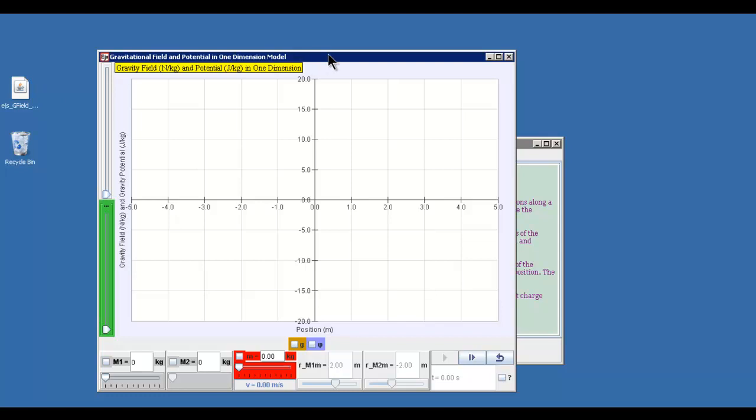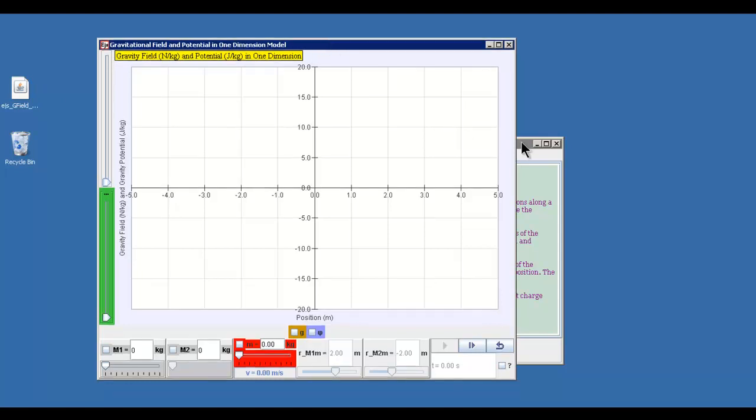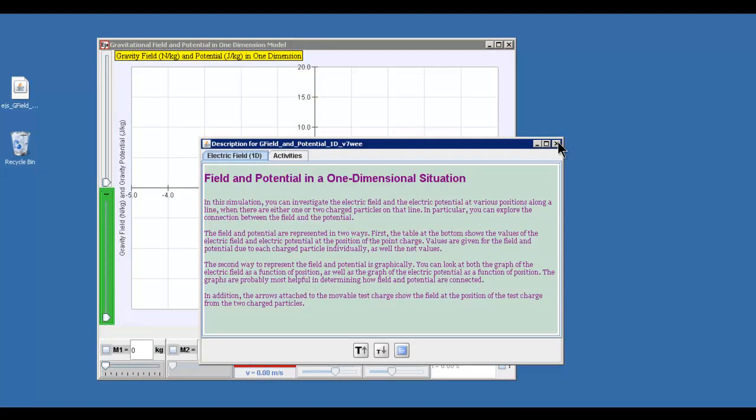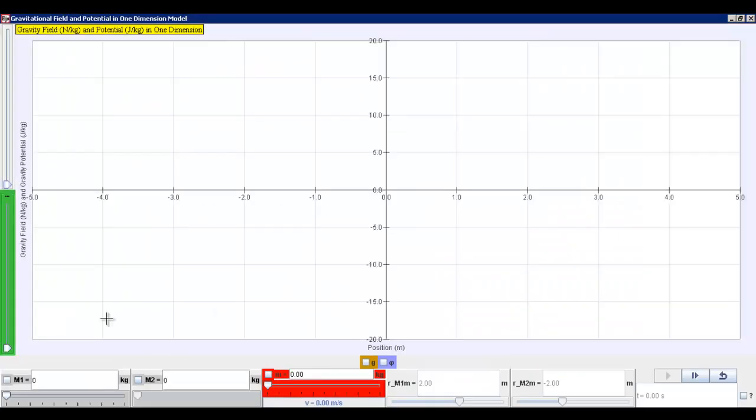It opens up, so ignore the HTML, just double click on the simulation to expand it to full screen. Now you can see that at the beginning there is this world view which you can see the different masses.